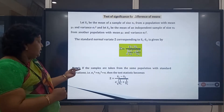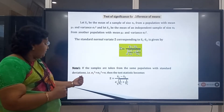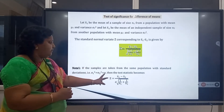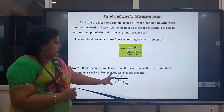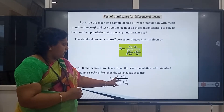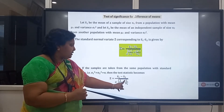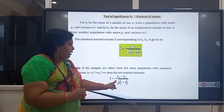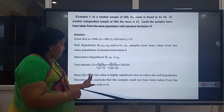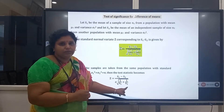The test statistic Z is: Z = (x̄₁ − x̄₂) / √(σ₁²/n₁ + σ₂²/n₂). If the samples are taken from the same population with standard deviation σ, then σ₁² = σ₂² = σ², and the test statistic becomes Z = (x̄₁ − x̄₂) / (σ · √(1/n₁ + 1/n₂)).